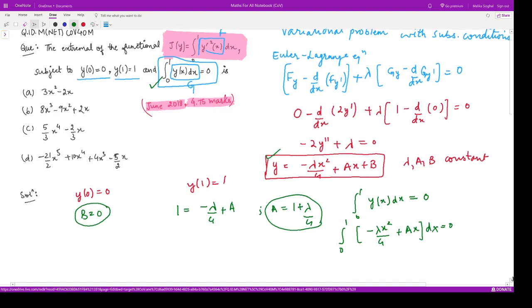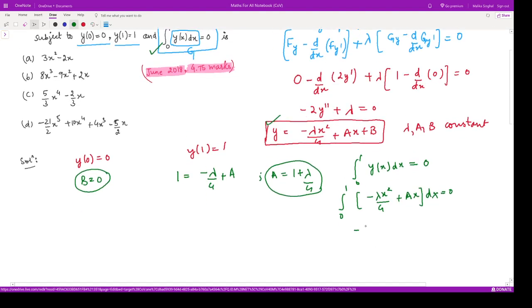Integrating, we obtain [-λx³/12 + Ax²/2] from 0 to 1 equals 0. From here we obtain A = λ/6. After solving these two equations, I obtain A = -2 and λ = -12.